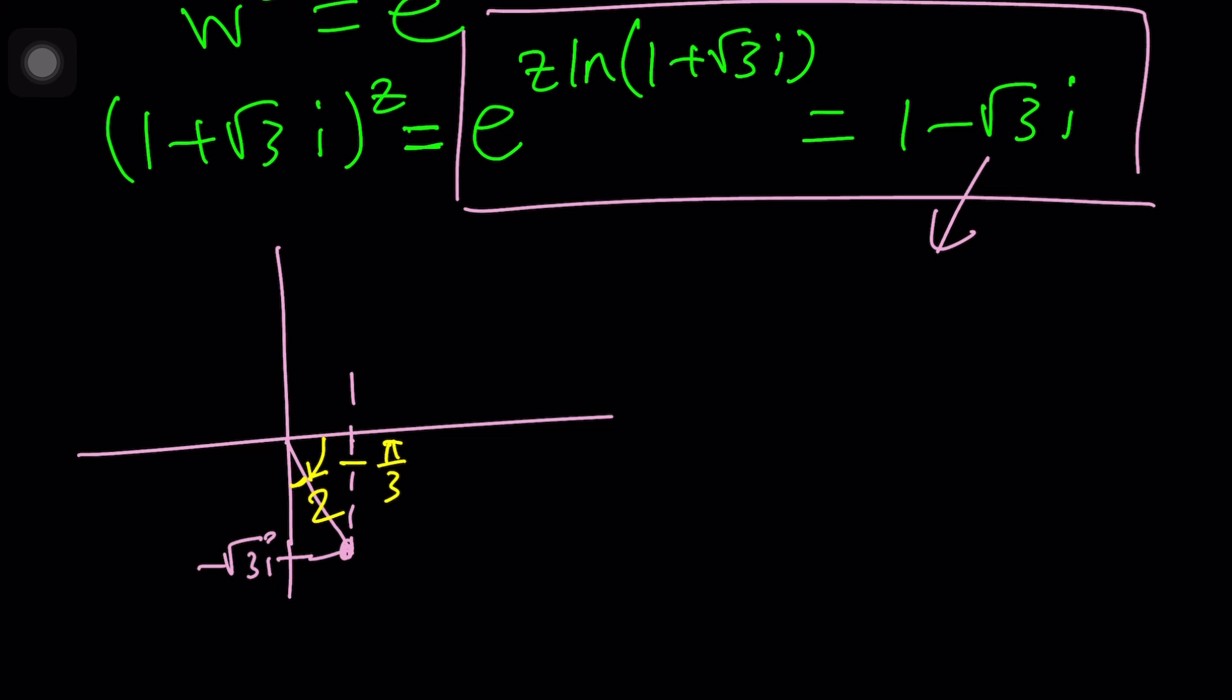The absolute value is going to be 2 from Pythagorean theorem. So we can write 1 minus root 3i as 2 times e to the power negative i times pi over 3. If you want, you can add 2 pi to this to make it positive. But that's no big deal, because we're going to consider all the possible cases. In other words, we should write this as 2 times e to the power i times negative pi over 3 plus 2 pi n. Make sense? That's going to give us all the solutions.